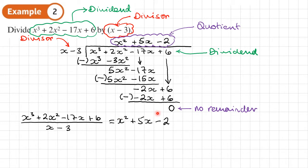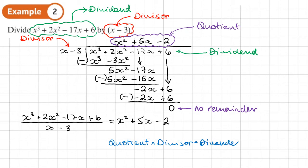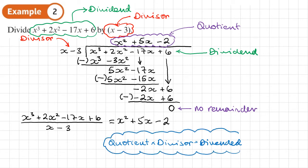There is a way to check your answer: if you multiply the quotient by the divisor, you'll get the dividend back. So: quotient times divisor equals the dividend. This only works if you have no remainder, but it's a useful check when that's the case.